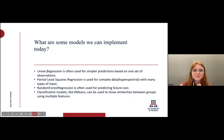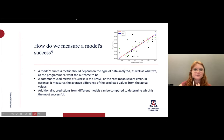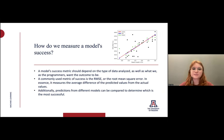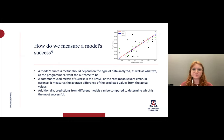The models we implemented are linear regression, partial least squares regression, random forest regression, and a classification model. How do we measure model success? A model's success metric should really depend on the type of data analyzed and what we want the outcome to be. A commonly used metric is root mean squared error, which means the average distance of the predicted from the actual values. Predictions from different models can be compared to determine which is most successful.